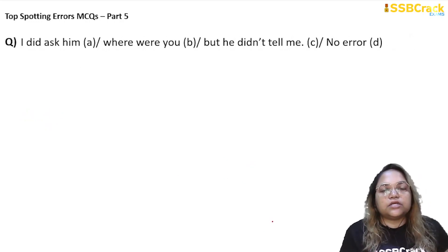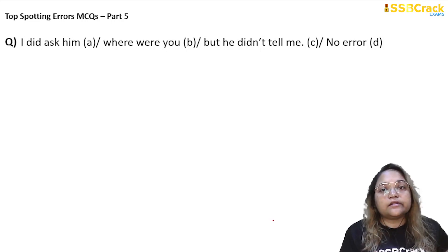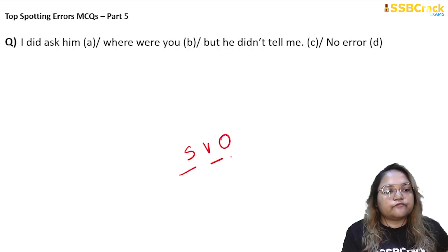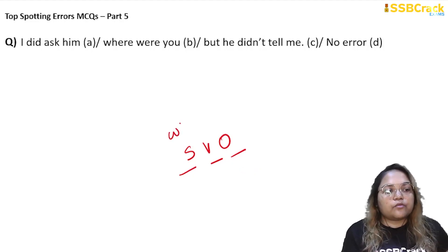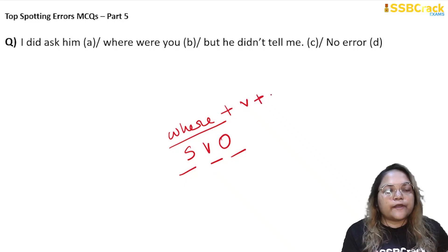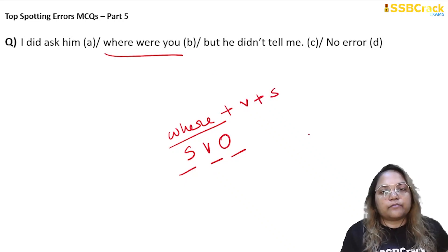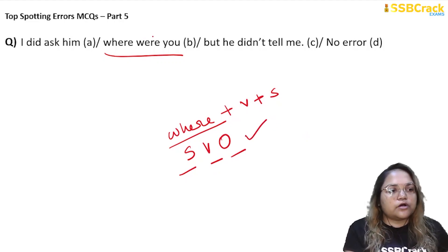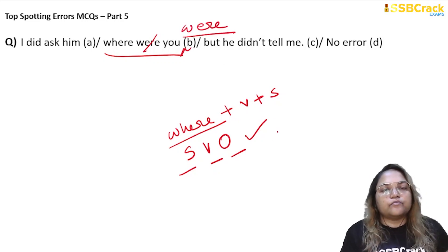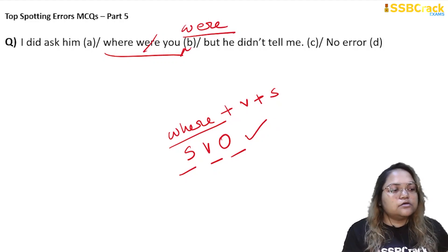Next question: 'I did ask him, where were you? But he didn't tell me.' This is a very common question. The sentence format should always be in SVO order — subject, verb, object. Only in interrogative sentences does this order change. So 'where were you?' uses the interrogative format, but since this is part of a sentence (indirect speech), we will not use the interrogative format. We will use SVO order: 'where you were' — subject comes before verb. So the error was in part B, and the answer is option B.